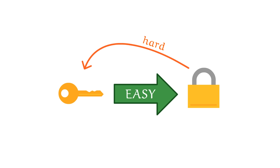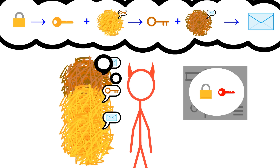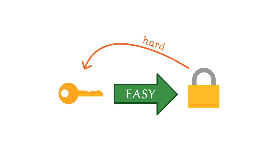You might be wondering why we can't just make it impossible to go backwards. There will always be at least one way to get the private key from the public key — going through every single possibility until a match is found. The best we can do is make the backwards process as hard as possible while keeping the forward process easy. This is just how one-way functions work, and they're the best thing we have so far.